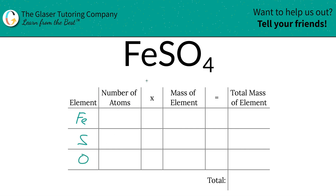Next is to write down the number of atoms of each. We've got to look at the subscripts to find the number of atoms. At the bottom of iron there is a one, so there's one iron. At the bottom of sulfur there is also a one, so there's one sulfur. And at the bottom of oxygen, there are four oxygens.